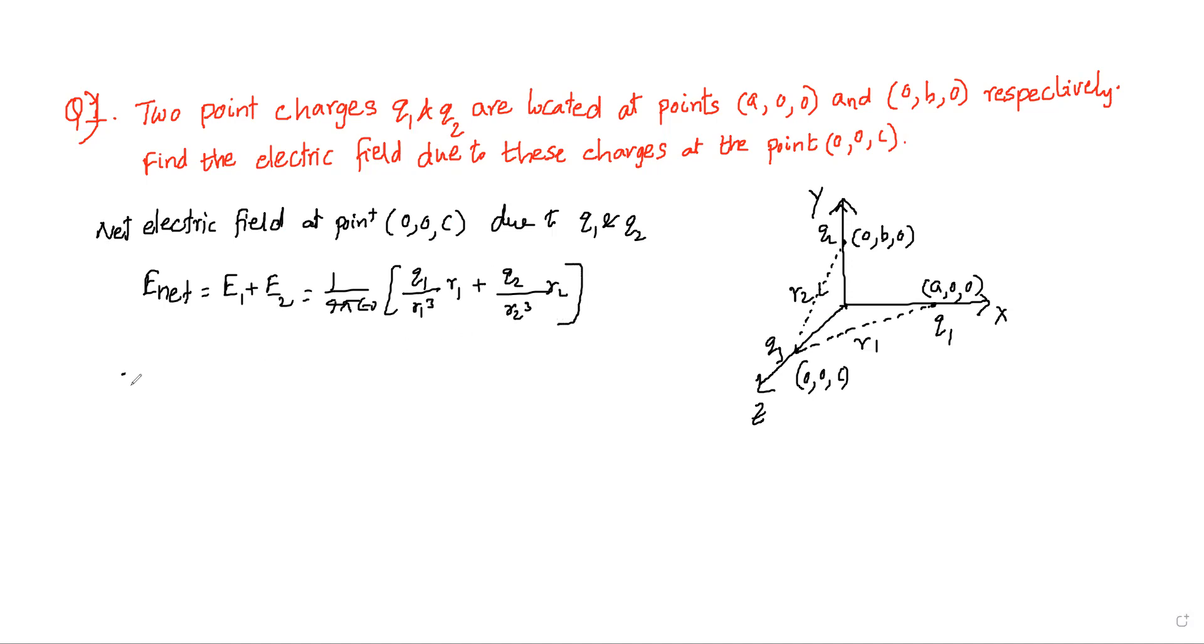Now let's say R1 vector is equal to -Ai + Ck, which means R1 magnitude is equal to square root of A² + C².